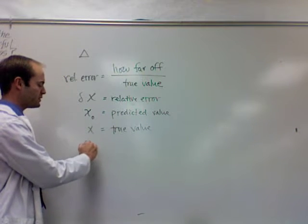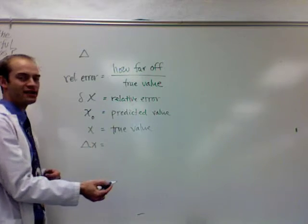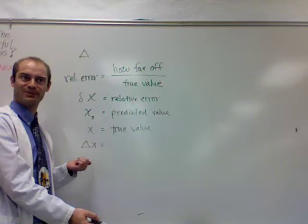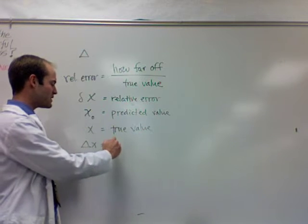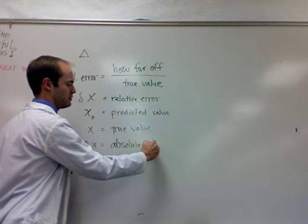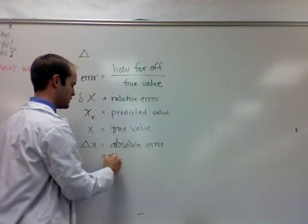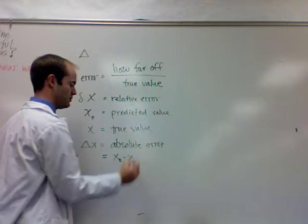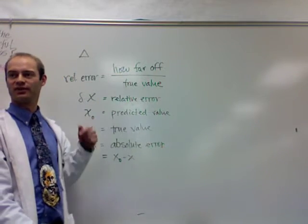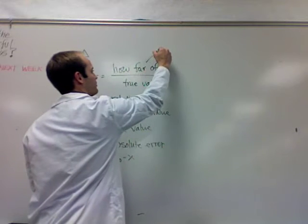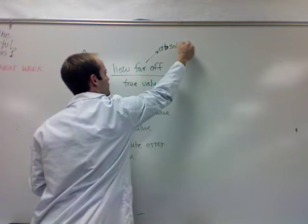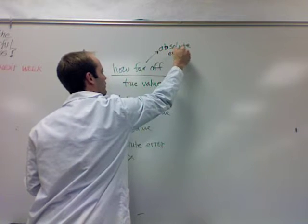And capital delta x is not displacement in error analysis. It used to be displacement for you, right? This stands for our absolute error. And it's just x naught minus x. So absolute error is just how far off you were. Same thing. This is absolute error.